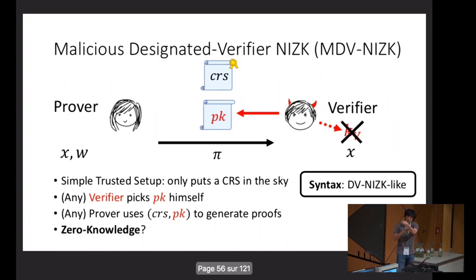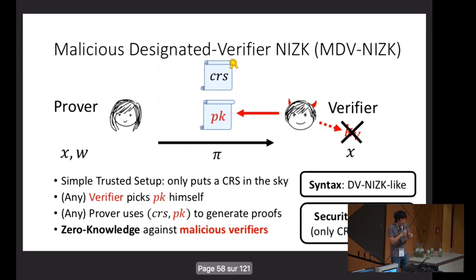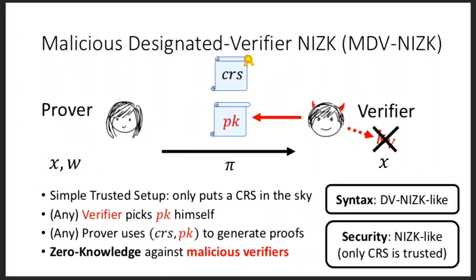The verifier can pick his pair of keys maliciously. But actually, from the point of view of the prover, it's not even clear there's any secret key associated. What we really want is that the zero knowledge property holds given arbitrarily maliciously generated public keys. In that sense, the security we get is much closer to NIZK and also the setup, in the sense that the only thing we trust is really that a magical entity put a CRS in the sky.